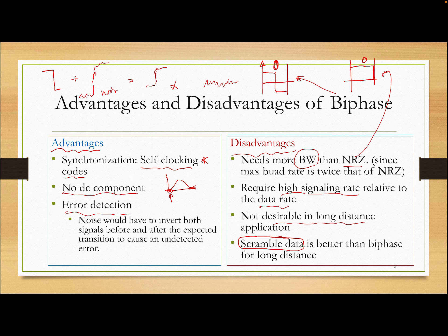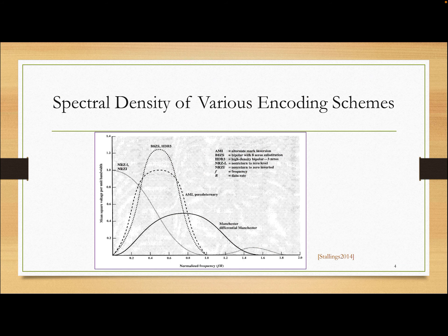We will talk about scrambling techniques next. Scrambling techniques are better than biphase for long-distance communications because they are based on bipolar AMI and fix the synchronization problem without requiring a high signaling rate like biphase.